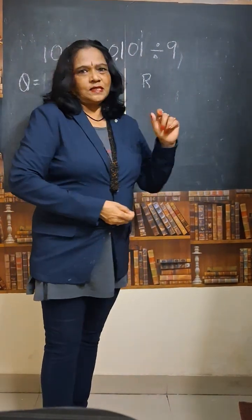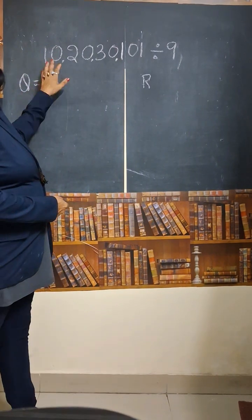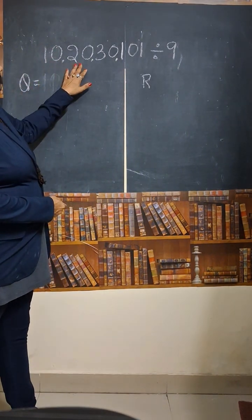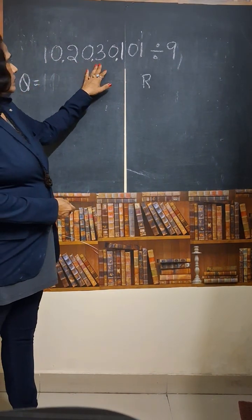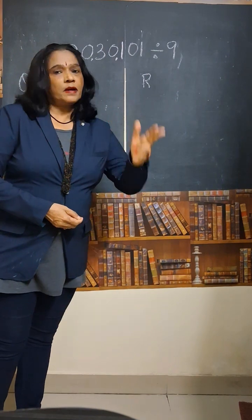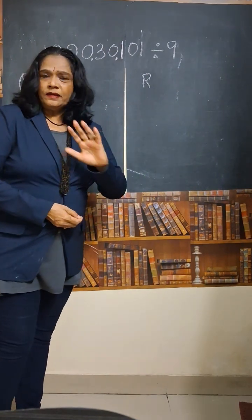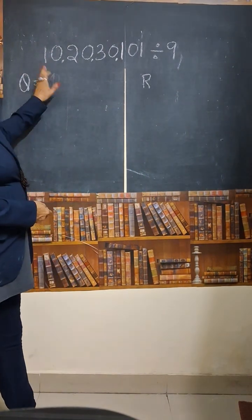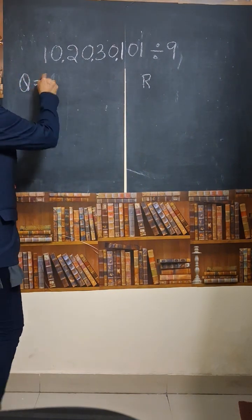See the numbers — it is a big number: 10 crore, 20 lakhs, 30,000 and 101, divided by 9. But we are not doing any division by 9. See what we are going to do — it is very, very easy.